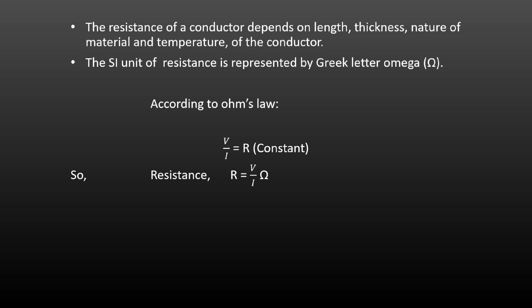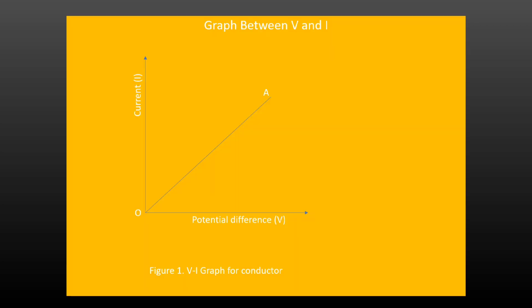Now we will see the graph of current versus voltage. The graph between current and voltage is a straight line.